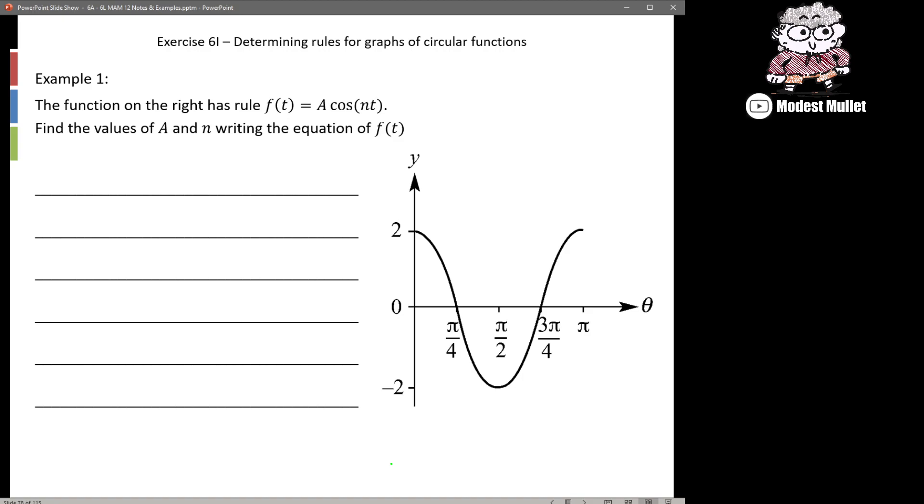So let's get straight into some worked examples. The function with the rule has f(t) = a cos(nt). Find the values of a and n and write the complete equation f(t). We're told it's a cos function and it's starting at its max so that's really handy. We're also given the form - there's no h value and there's no k value. Both of those are equal to zero so there's no translations in this case. So it makes it pretty easy to recognise the key details.